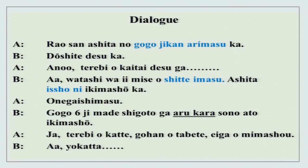Now listen to this conversation — there is something new and let us see how much you understand. Rao-san, ashita no gogo jikan arimasu ka? Do ushite desu ka? Ano, terebi wo kaitai desu ga... Watashi wa ii mise wo shitte imasu. Ashita issho ni ikimashou ka? Onegaishimasu. Gogo roku-ji made shigoto ga aru kara, sono ato ikimashou. Ja, terebi wo katte, gohan wo tabete, eiga wo mimashou. Yokatta! What is new here? Let us see.